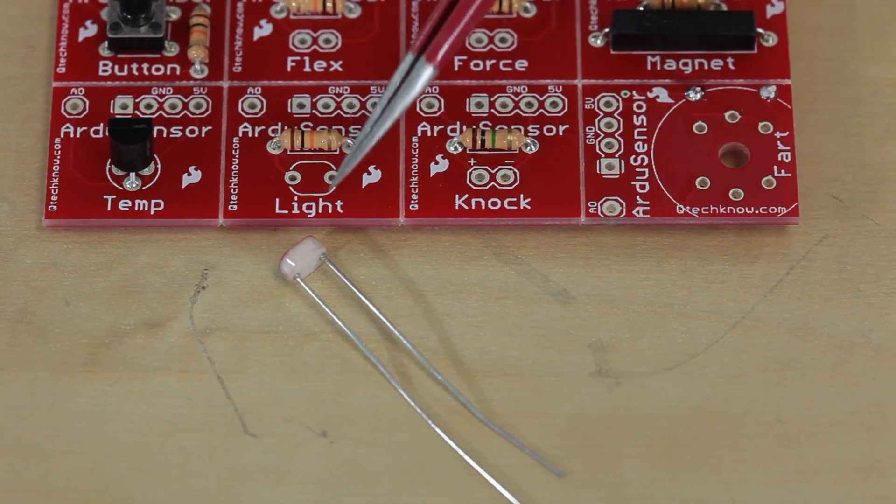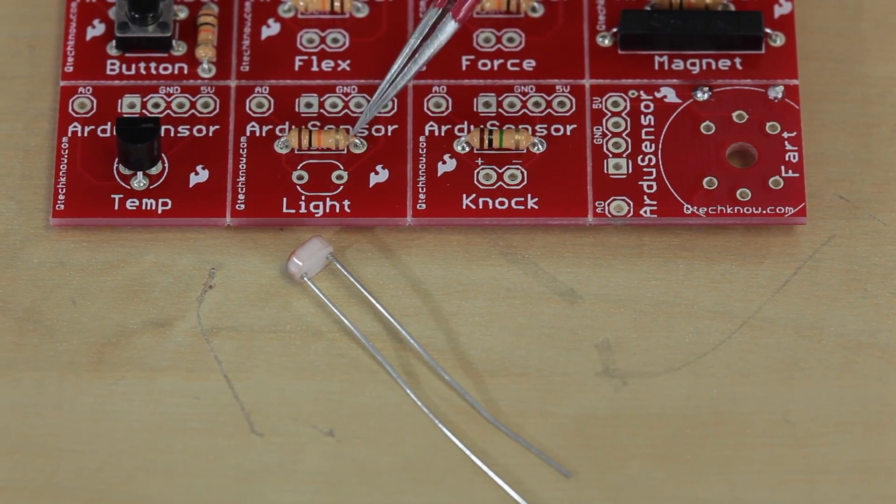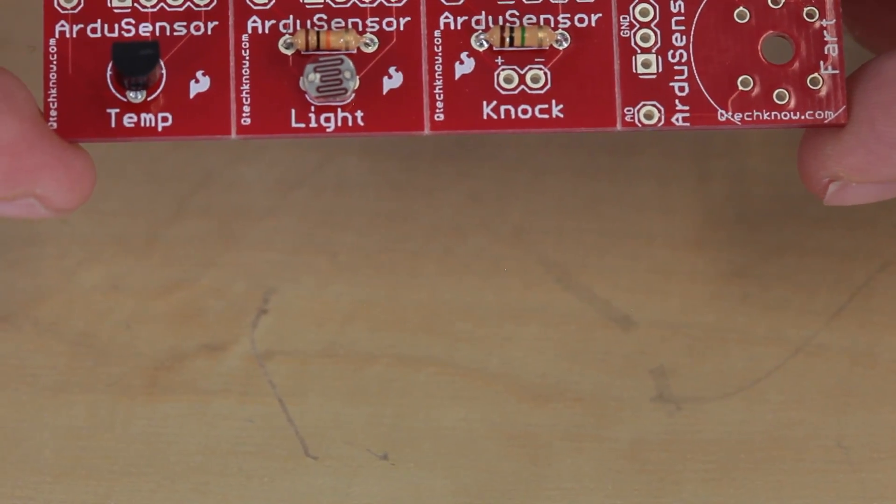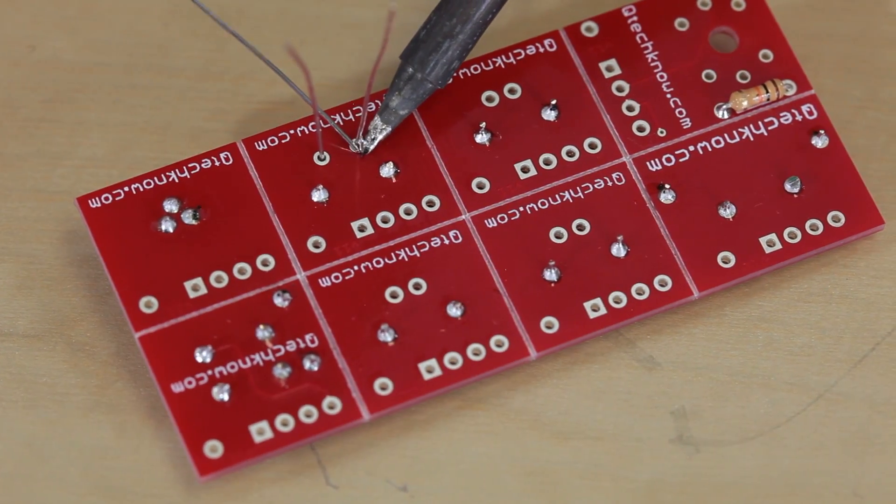Next up we've got the light sensor. The light sensor goes right here where it says light, and it's not polarized, so it doesn't matter which way it goes. Just go ahead and insert the leads, it doesn't matter how far you push it down, flip around, and solder from the backside.